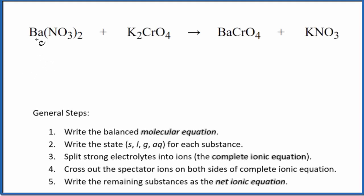In this video, we'll write the balanced net ionic equation for barium nitrate plus potassium chromate. That's Ba(NO3)2 plus K2CrO4.